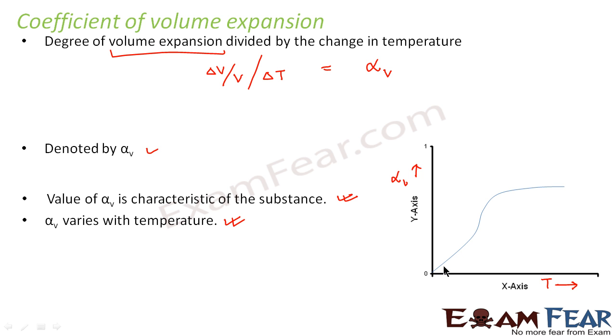At low temperatures, it varies linearly. After that, there is non-linear behavior. At higher temperatures, the value of α_V becomes almost constant. This is how α_V varies with temperature.